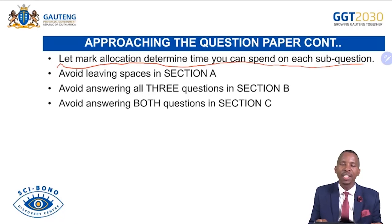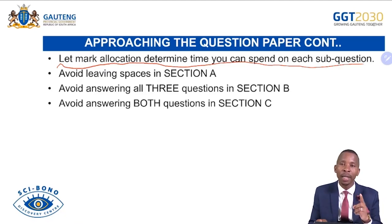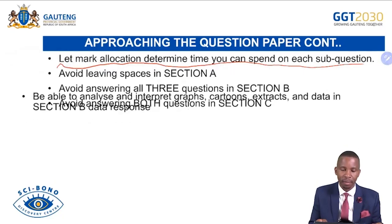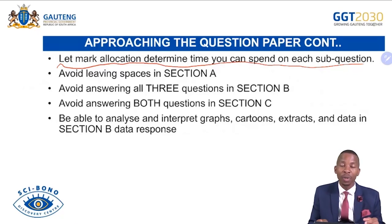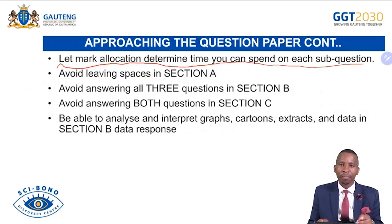Avoid answering both questions in Section C — answer only one as per instruction. Be able to analyse and interpret graphs, cartoons, extracts, and data in Section B data response. Analyse data response with understanding before attempting to answer. Be aware that with a given data response, a maximum of two answers might be found in the data — the rest comes from your own knowledge of the subject.